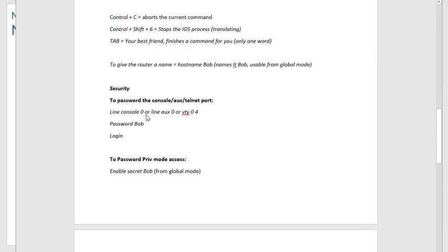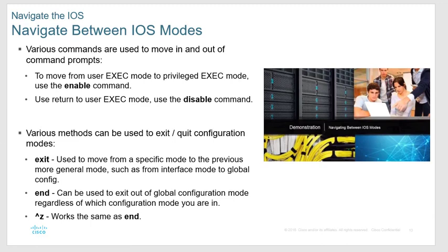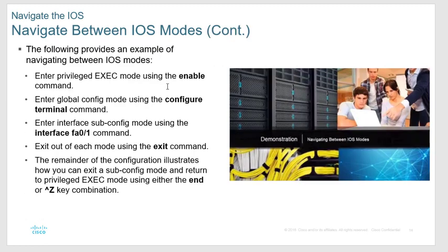From global mode I can go to sub-interface mode by typing 'interface fa0/1' or 'fa0/0'. Then 'exit' takes me back to global mode, and 'exit' again takes me back to privileged mode. So exit takes you back one level at a time, and 'end' takes you all the way back to privileged mode no matter how far you're in. Control-Z does the same thing as typing the word 'end'.